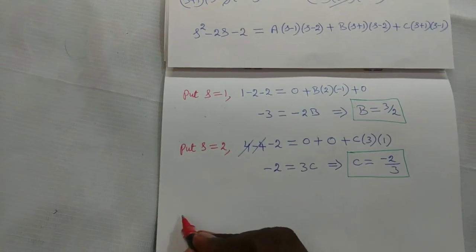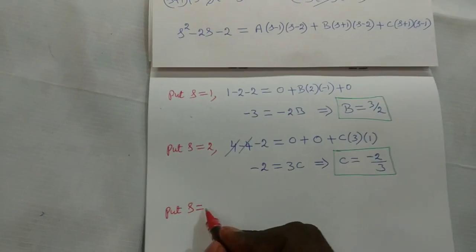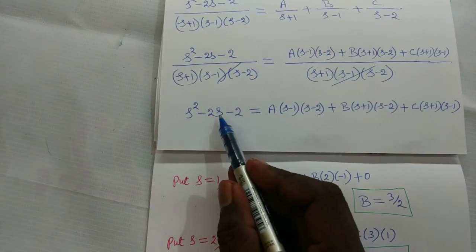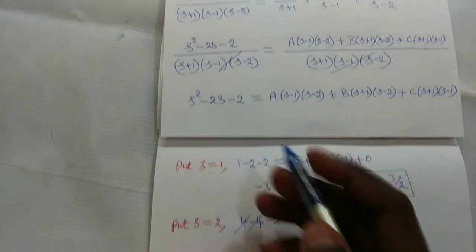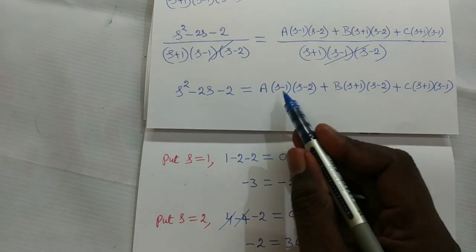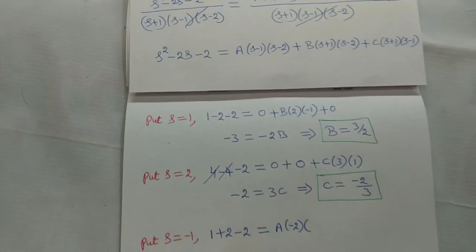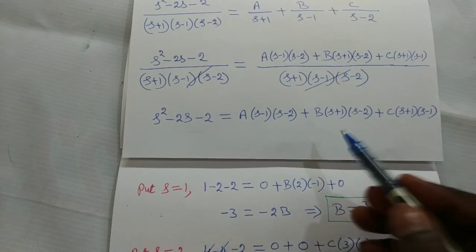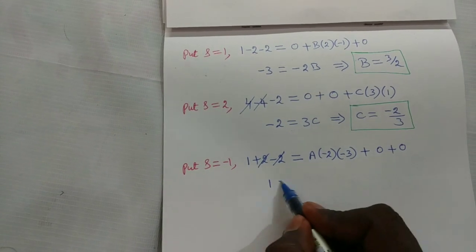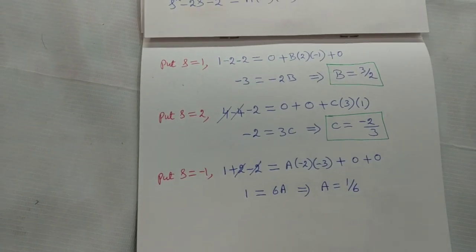To find A, put s equal to minus 1. The B-term and C-term become zero because (−1+1) = 0. So (−1)² + 2·(−1) − 2 equals 1 − 2 − 2 = minus 3, wait: 1 + 2 + (−2) = 1, which equals A·(−1−1)·(−1−2) equals A·(−2)·(−3) equals 6A. So 1 equals 6A, which implies A equals 1/6.